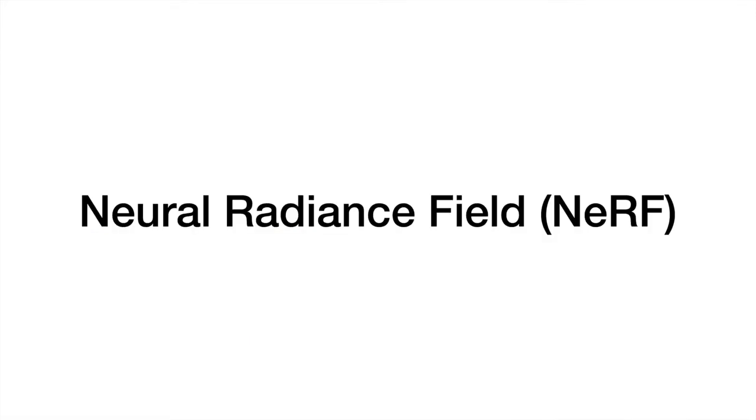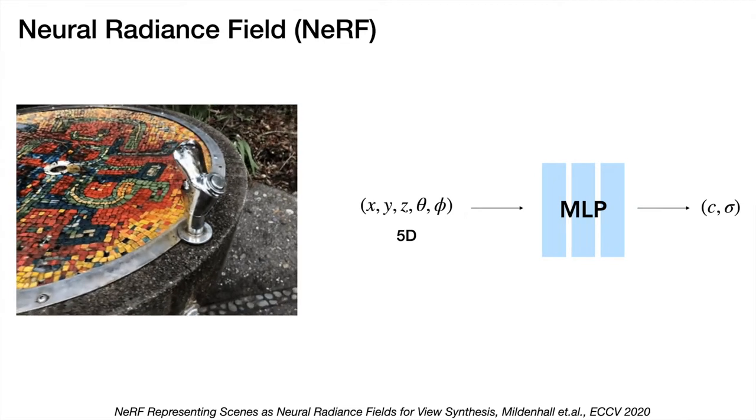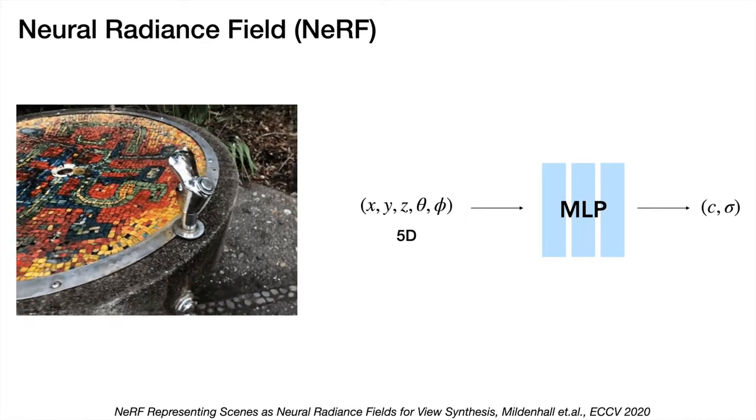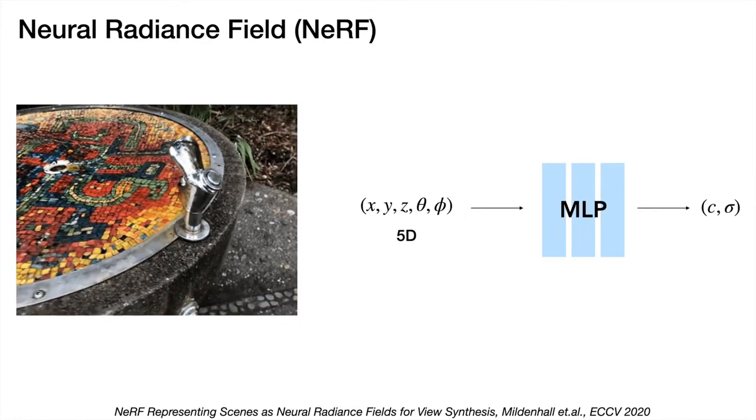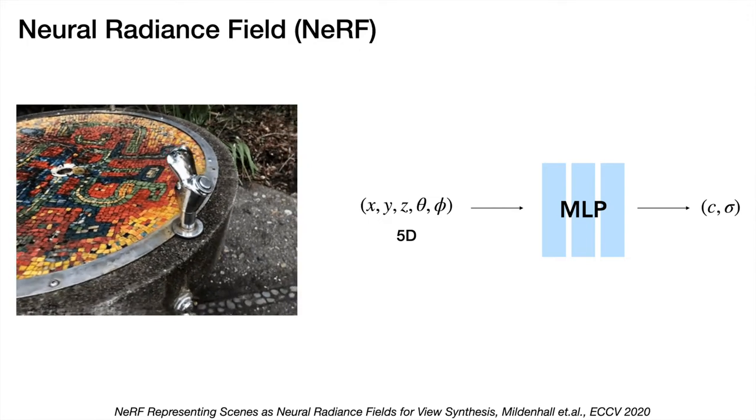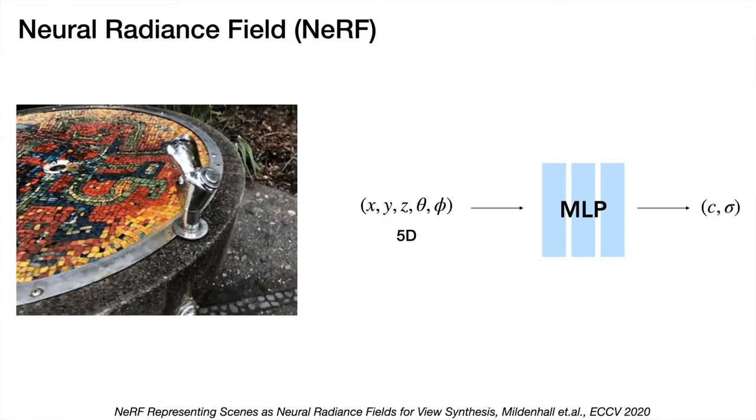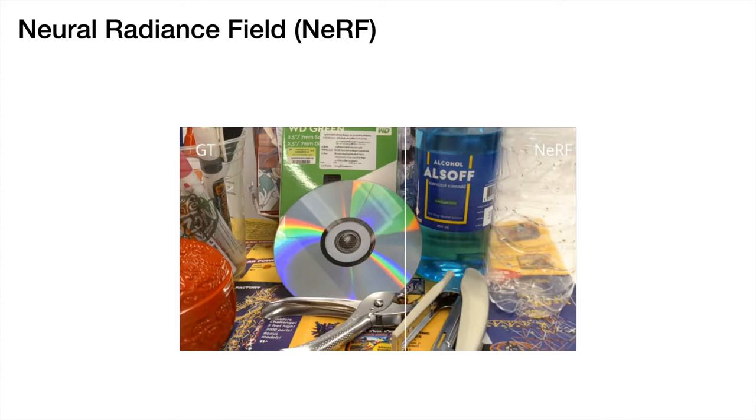Recently, Neural Radiance Field achieved great progress towards photorealistic view synthesis by representing a scene using a neural network that takes a 5D input to predict color and opacity. NeRF, however, is challenged when rendering scenes with complex view-dependent effects, such as the reflection on the CD as shown here.